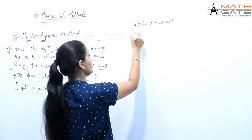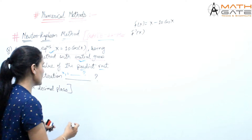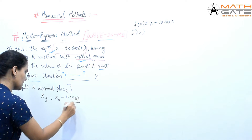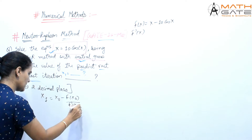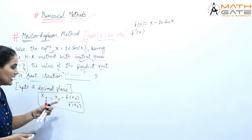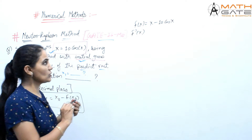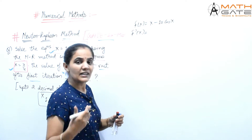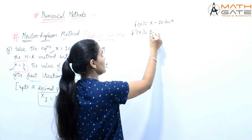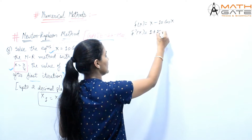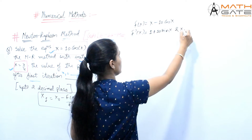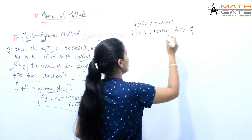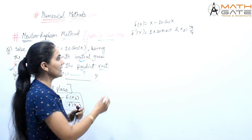The Newton-Raphson formula is x1 = x0 minus f(x0) divided by f'(x0). We have f(x), so now let's find f'(x). Differentiating f(x) = x minus 10 cos x gives f'(x) = 1 plus 10 sin x. The initial root given is x0 = π/4.